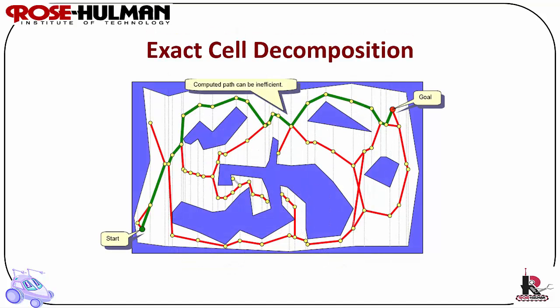An important aspect of cell decomposition is the placement of the boundaries between the cells. If the boundaries are placed as a function of the structure of the environment, then the method is exact cell decomposition. If the decomposition is an approximation of the actual map, the system is an approximate cell decomposition.